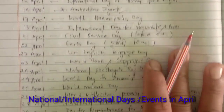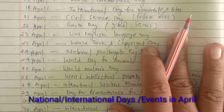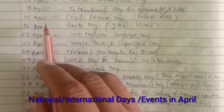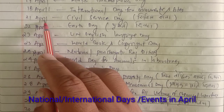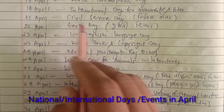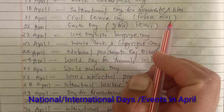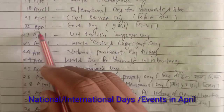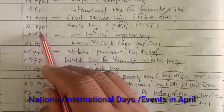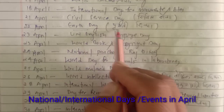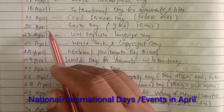18th April is International Day for Monuments and Sites. Then 21st April is Civil Services Day, or Civil Seva Divas. 22nd April is a key important day — that is Earth Day, known as Prithvi Divas.